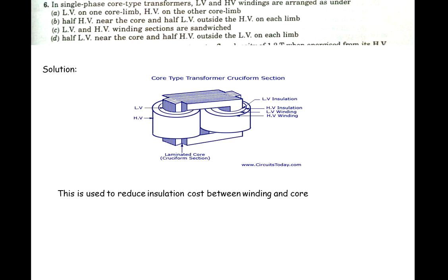Question 6: in a single-phase core transformer, the LV and HV windings are arranged as — Option A: LV on one limb and HV on the other core limb; Option B: half LV near the core and half LV outside on each limb; Option C: LV and HV winding sections are sandwiched; Option D: half LV near the core and half HV outside the LV on each limb. Now the solution: LV winding must be placed near the core and HV winding placed over the LV winding.